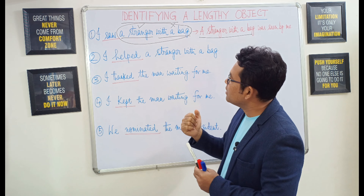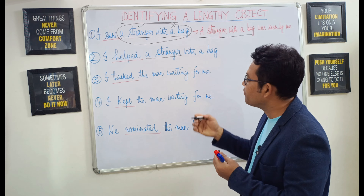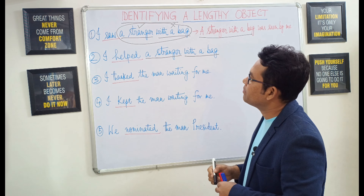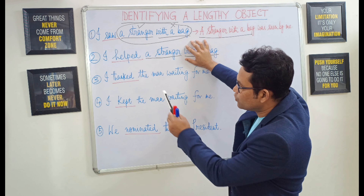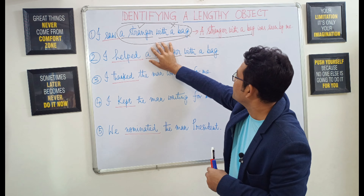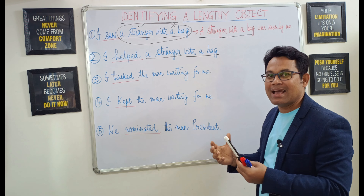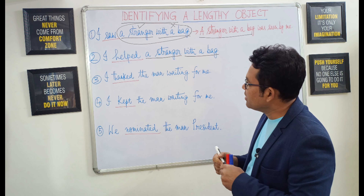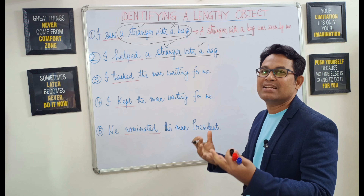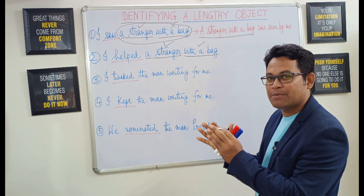Look at the second example: I helped a stranger with a bag. Here as well we are getting two units — 'a stranger' is a noun phrase and 'with a bag' is another phrase. Let's apply the same rule. Imagining 'with a bag' is absent: 'I helped a stranger' is meaningful. Then, 'I helped with a bag' is also making sense because in this case 'with a bag' is functioning as an adverb phrase. That means both the noun phrase and the adverb phrase are making independent sense, so both are valid and independent.